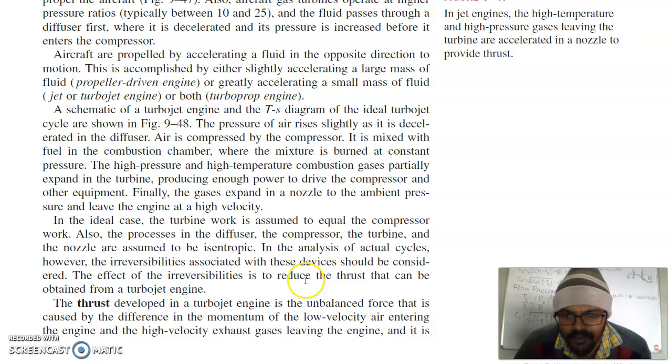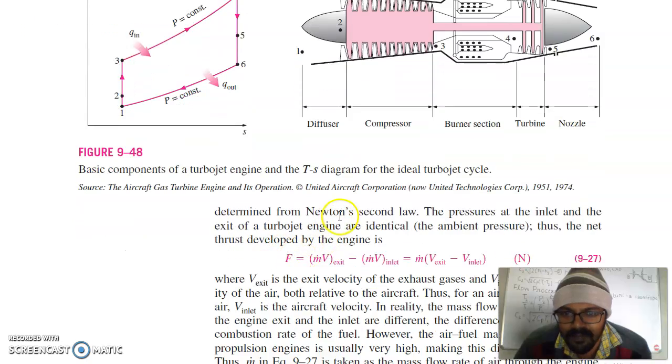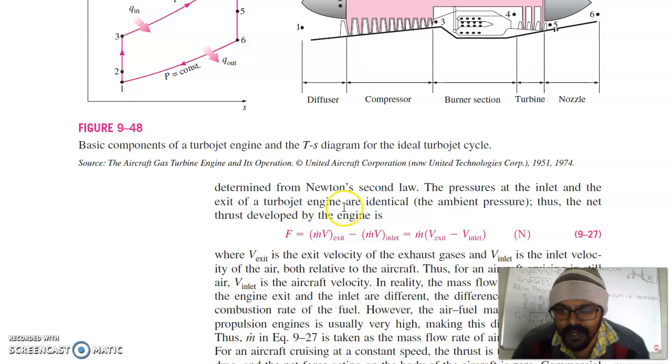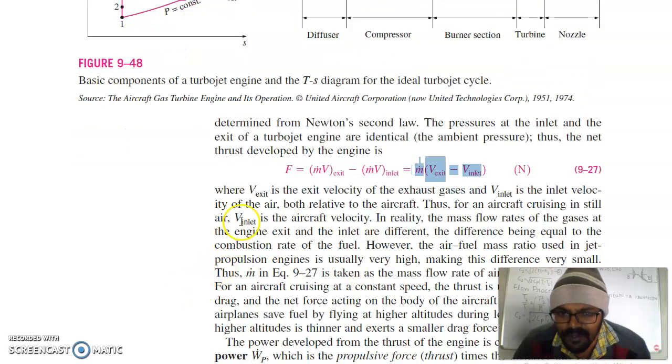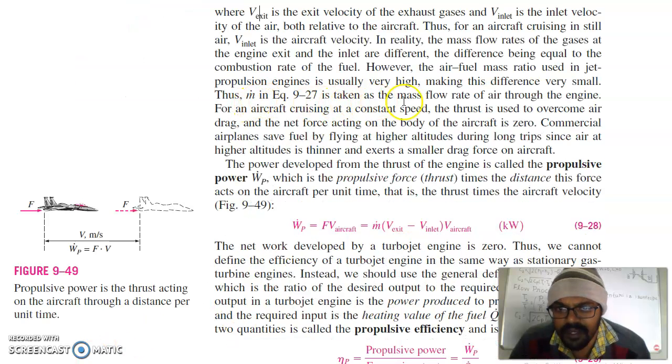The effect of the irreversibilities is to reduce the thrust that can be obtained from the turbojet engine. The thrust developed in a turbojet engine is the unbalanced force that is caused by the difference in the momentum of the low velocity air entering the engine and high velocity exhaust gases leaving the engine and is determined from Newton's second law. The pressure at inlet and the exit of turbojet engine are identical. The net thrust by engine, that is force, is equal to M dot V exit minus M dot V inlet. This is the thrust generated by your gases. Where V exit is the exit velocity of exhaust gases and V inlet is the inlet velocity of the air, both related to the aircraft.